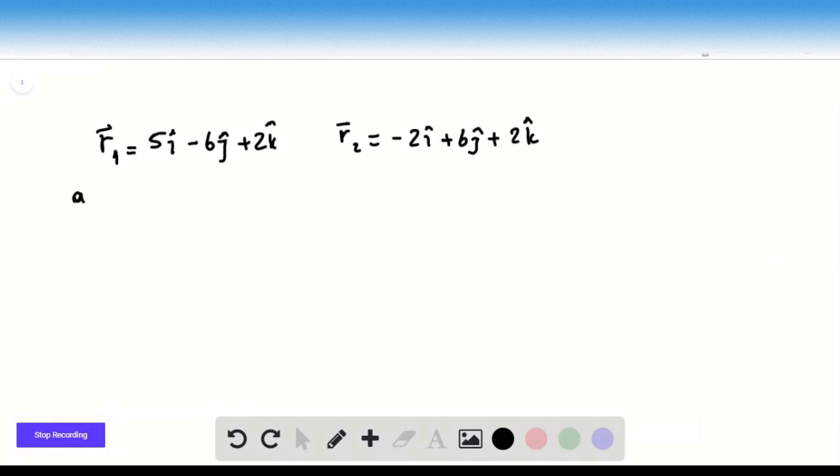In part A, we're asked for the proton's displacement vector. The proton's displacement vector would be delta R, final vector minus the initial position vector, right?